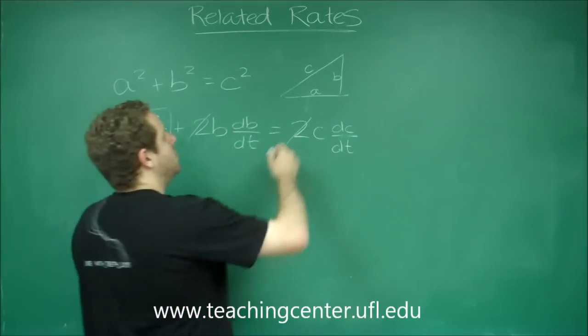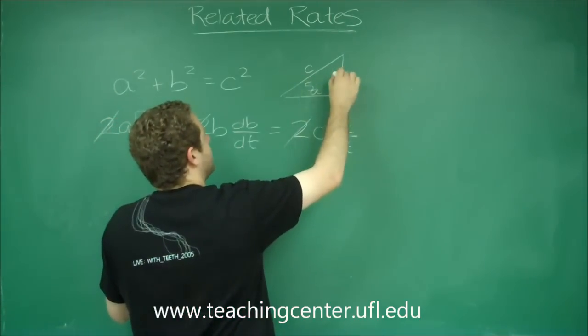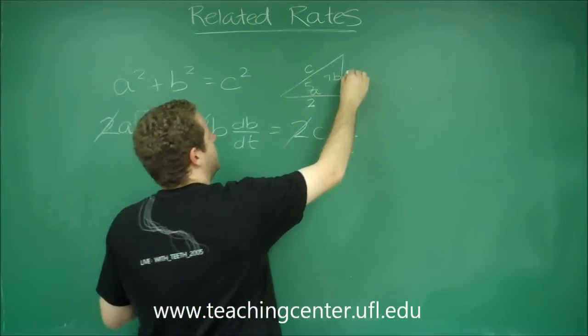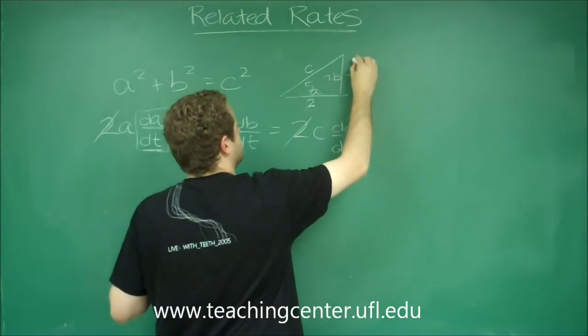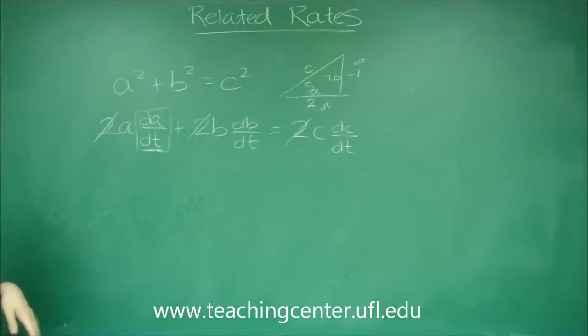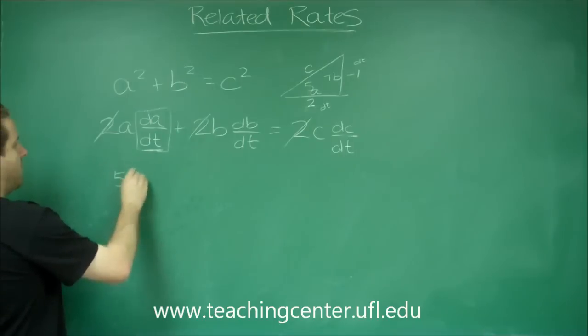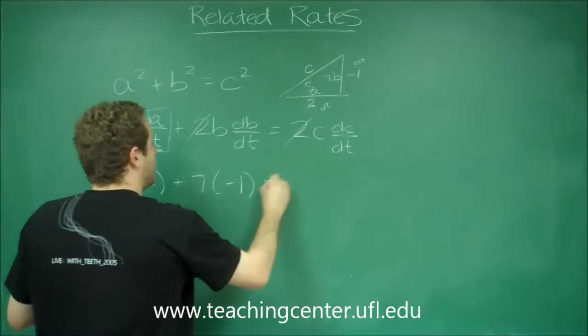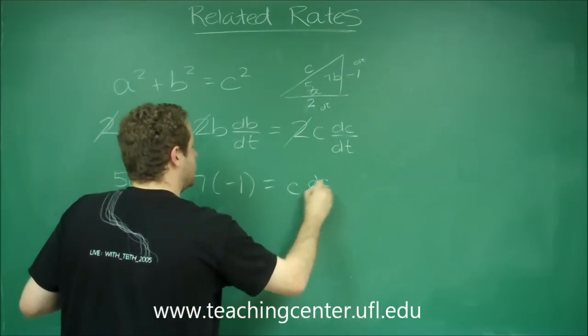So for example if you knew that A was 5 and B was 7, DA DT was 2 and DB DT was negative 1, so let's put this as the DTs because those are the rates there. You can see let's plug in everything we know. We have 5 times 2 plus 7 times negative 1 equals C times DC DT.